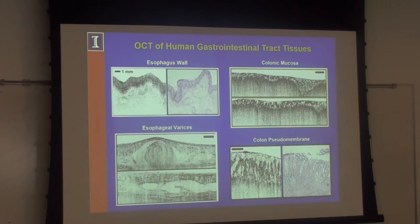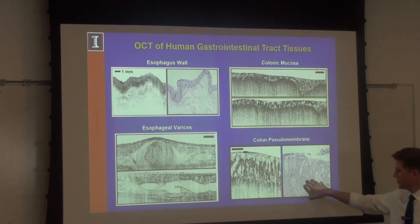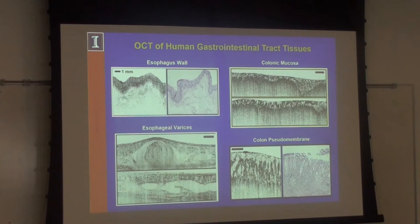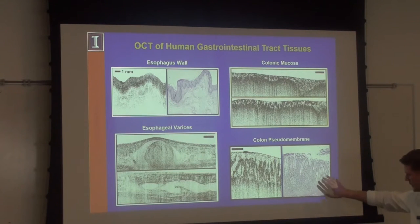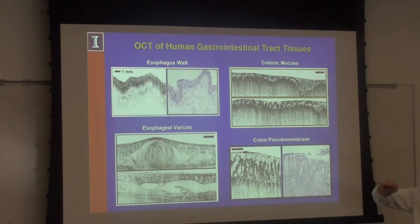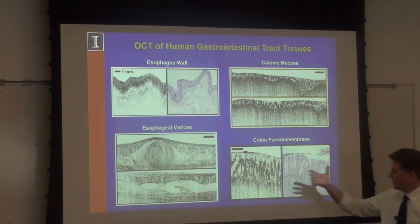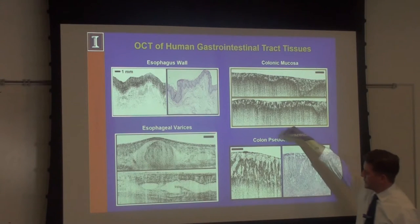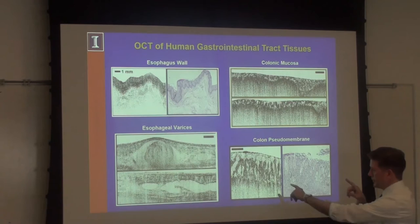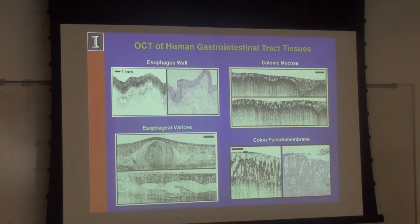Looking at structure, these are examples of the human GI tract — the esophagus wall compared to histology, and the colon — and the OCT images resemble the morphology quite well of the actual tissue. These images are captured in very different ways: histology takes tissue out, sections and stains it, and images it in transmission. OCT images fresh tissue with light incident from above and reflected back — completely orthogonal directions — yet the structure looks remarkably similar. That was always a big surprise: how well we can see structure with OCT.